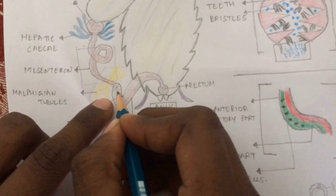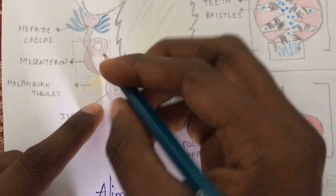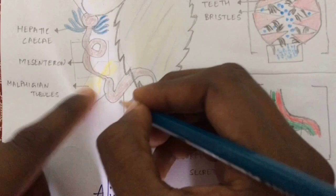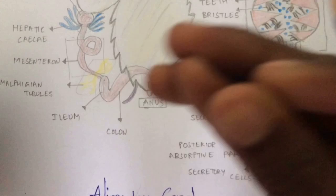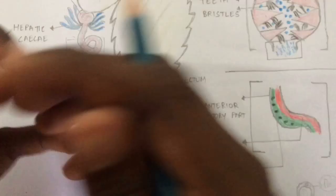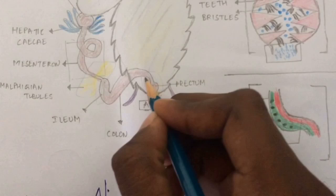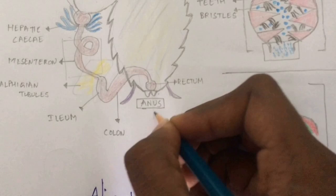The ileum sends food material to the colon, and the colon mainly sends food material to the rectum. In the rectum, water and nutrients are totally absorbed. All particles will be absorbed in the rectum, and then the waste material will be sent out through the anus. This is the total structure of the digestive system of Periplaneta americana.